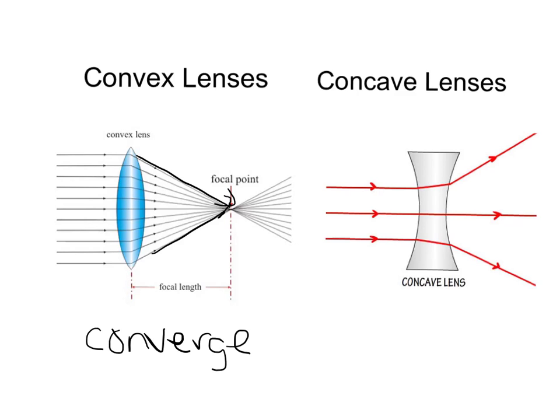If we look at concave lenses, here we have parallel light rays coming in, and these parallel rays actually diverge. They spread out. So a concave lens does the opposite of what a convex lens does.